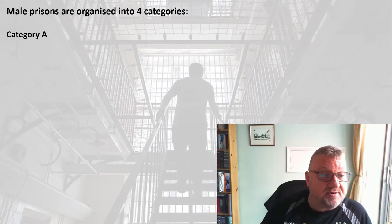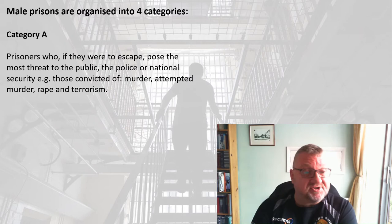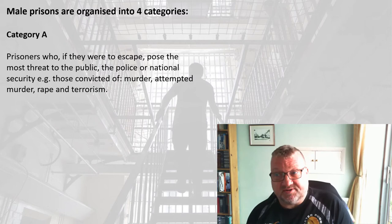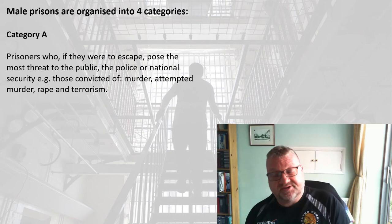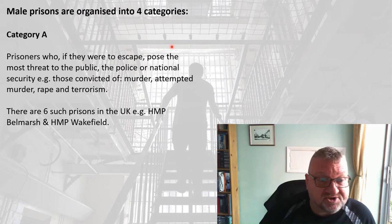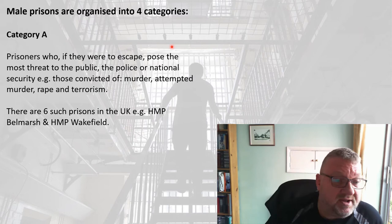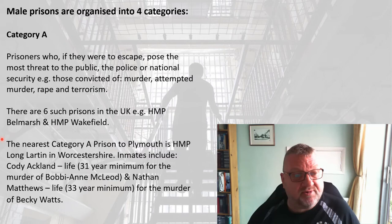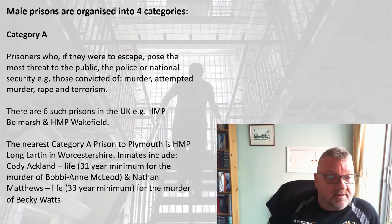Male prisons are organised into four categories. Category A prisons are for the most serious offenders — prisoners who, if they escaped, would pose the greatest threat to the public, the police, or national security. Those tend to be people convicted of murder, attempted murder, rape, terrorism, etc. There are six such prisons in the UK, the most notorious being HMP Belmarsh and Wakefield. The nearest Cat A to Plymouth is Long Lartin in Worcestershire.